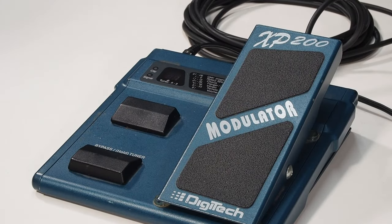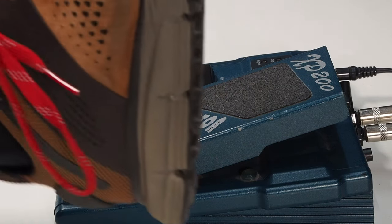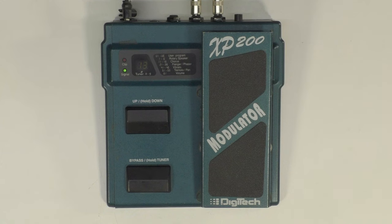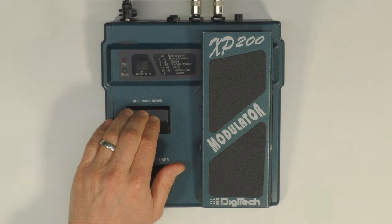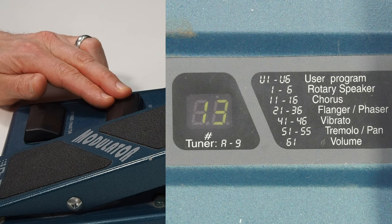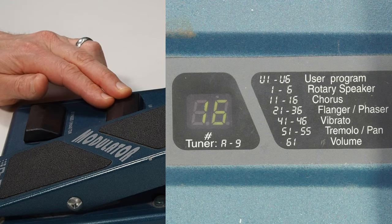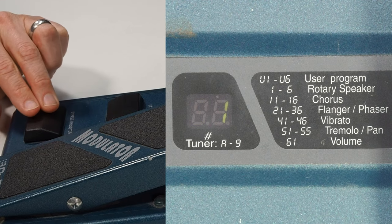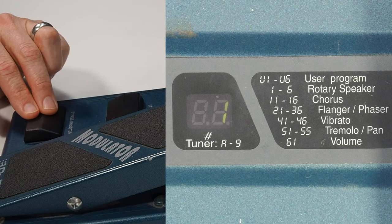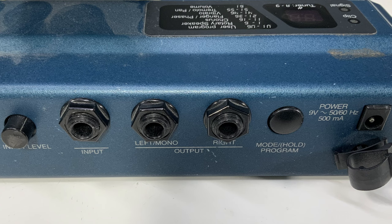So let's start on the outside. The pedal is made of steel and designed to withstand being kicked around on a stage. There's two foot switches. The top switch selects the kind of effect, or the program, being applied to the input signal. The number of the active program is displayed on the front on a green two-digit LED display. The bottom foot switch allows you to bypass the effect, or enter a tuning mode. On the side, there's a single audio input jack, and an input level adjustment knob.